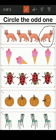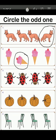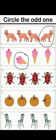Now let's look at the second picture, which is of ice cream. Which ice cream is the odd one? The first one? No. The second one? Yes! So we have to circle the odd one like this.